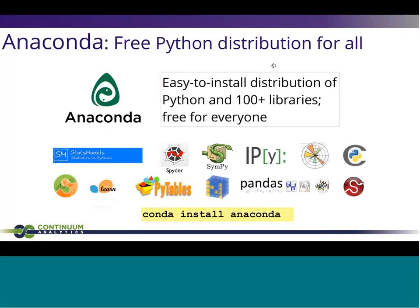I definitely want to encourage everybody to go out and try Anaconda. It's a free Python distribution for everybody — free for commercial use, free for personal use, on as many machines as you want. It's an easy-to-install distribution of Python with over 100 libraries, including the NumPy stack. The biggest feature of Anaconda is actually the Conda package manager. You can just get the Conda package manager by downloading Miniconda at the conda.pydata.org site. If you want to get Numba, conda install Numba. For Numba Pro, conda install Numba Pro, on Mac, Windows, or Linux.